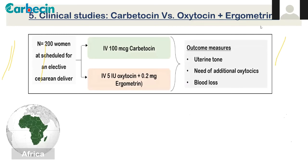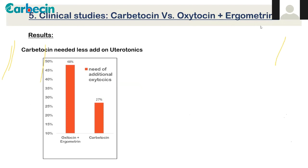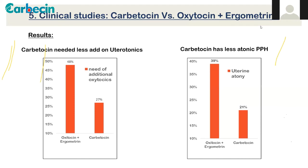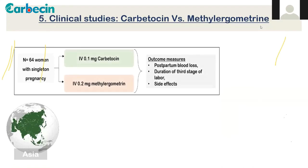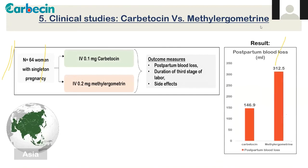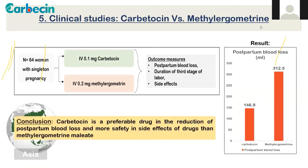Further studies assessed uterine tone and need for additional oxytocin or ergometrine: carbetocin performed better. In comparison with methyl ergometrine, carbetocin reduced postpartum blood loss by approximately 50%, making it a preferable drug with a better safety profile. Blood and blood products are not easily available; most women are anemic, so even minimal blood loss creates serious problems.